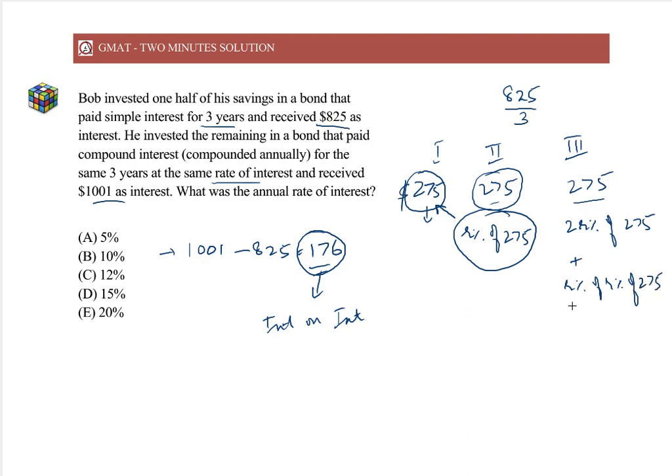This is a very small number compared to these because this is another R percent of the R percent of $275. We can say that we have 3R percent of $275 plus this very small amount which we can ignore for now.